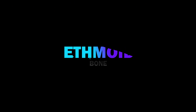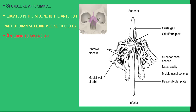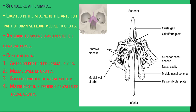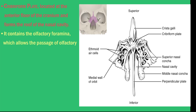The last bone of the cranium is the ethmoid bone. It has a sponge-like appearance and is located in the midline in the anterior part of the cranial floor, medial to the orbits, anterior to the sphenoid, and posterior to the nasal bones. The ethmoid bone contributes to forming the anterior portion of the cranial floor, the medial wall of the orbits, and the superior portion of the nasal septum. It plays an important role as a major superior supporting bone for the nasal cavity. The cribriform plate of the ethmoid bone forms the roof of the nasal cavity and contains the olfactory foramina, which allow passage of the olfactory nerves.